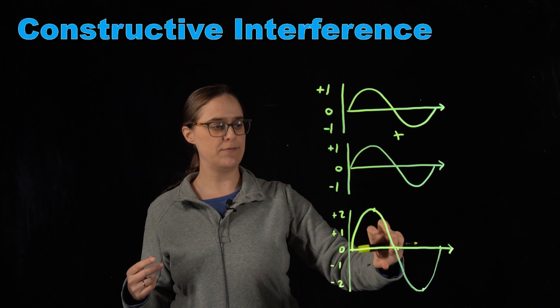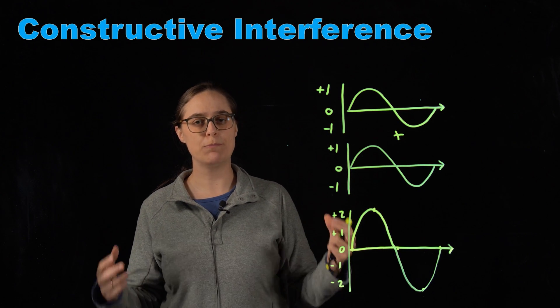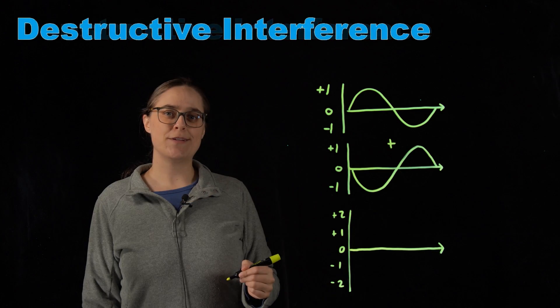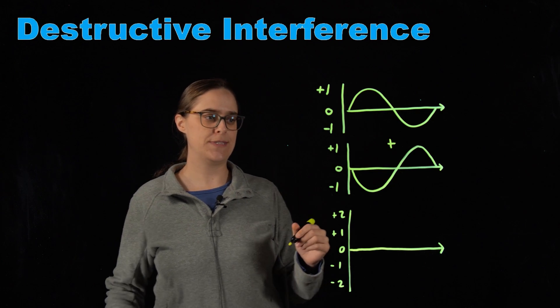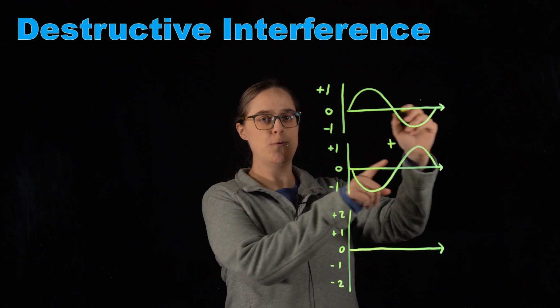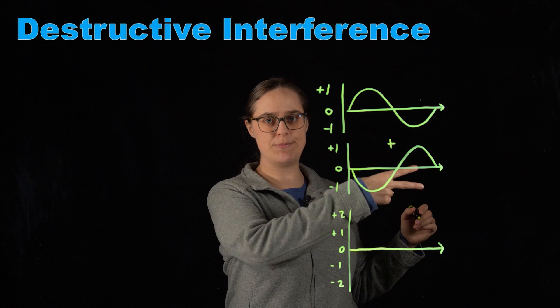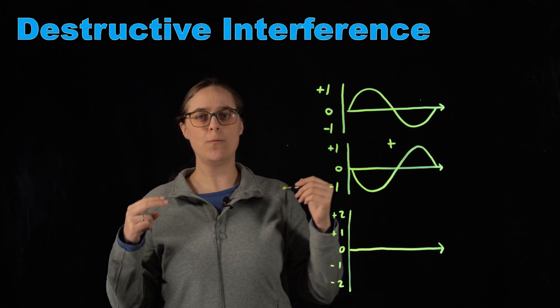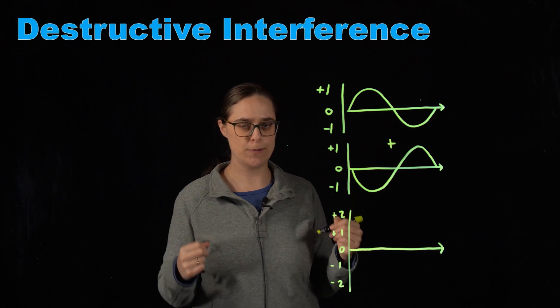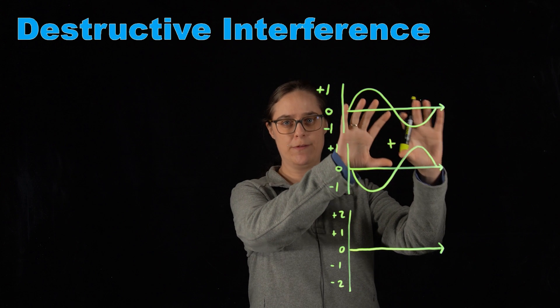Our eyes perceive this larger amplitude to be brighter light. Now let's talk about the destructive interference of waves. So at the top I have two original waves, and just like last time they are traveling together. Same speed, same direction. The wave that I'm actually going to be able to observe is the sum of these two waves.